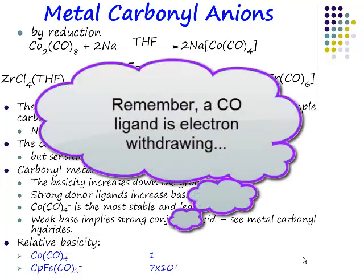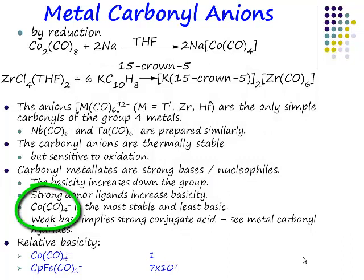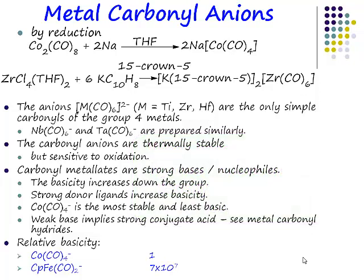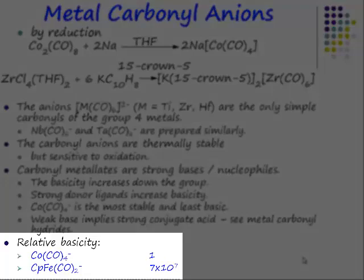A carbonyl ligand is an electron-withdrawing ligand. So for an anion like cobalt tetracarbonyl anion, it is described as the most stable and the least basic. There is formally a pair of electrons on the cobalt centre, but each one of those carbonyl ligands is withdrawing that electron density from the cobalt centre, meaning that cobalt tetracarbonyl anion is actually a very weak base. If you replace one of those carbonyl ligands with a better donor — something that increases electron density on the metal centre — you make your metal centre a stronger base.